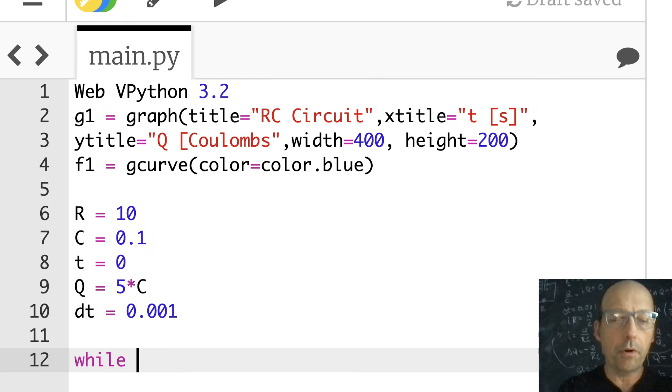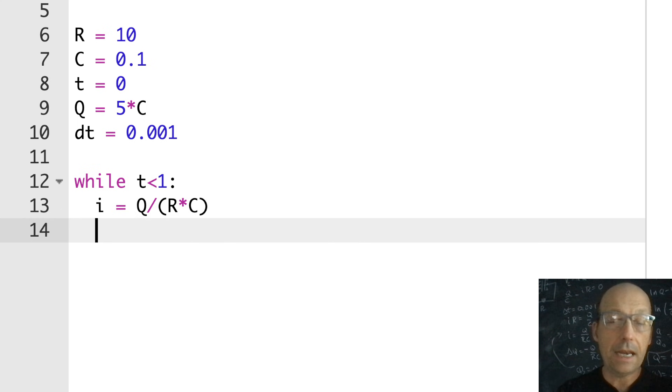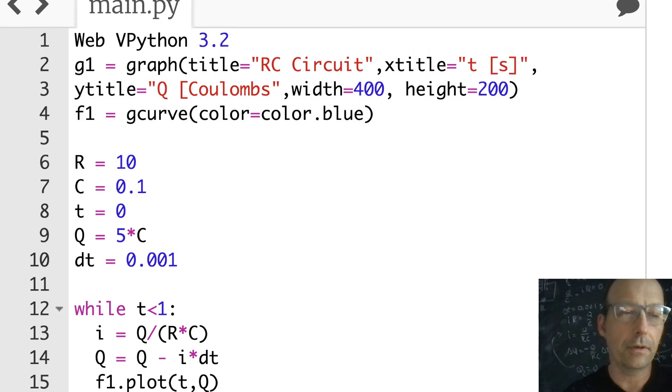And I'm going to make a loop while T is less than 1. I'm going to run this for 1 second. So the first thing I want to do is to calculate that current. I equals Q over R times C. Now I'm going to use that to update the charge. So Q equals Q minus I times DT. That's what I have right there. Now I can update time. Let's plot it. F1.plot T Q. Update time. T equals T plus DT. I feel like I did something wrong. Let's just run this. That's it. I didn't do anything wrong. So it's discharging. You can see it's a curve. Let's run it for three seconds. I mean, it's the simplest program. I mean, half of the code is how to make a graph.